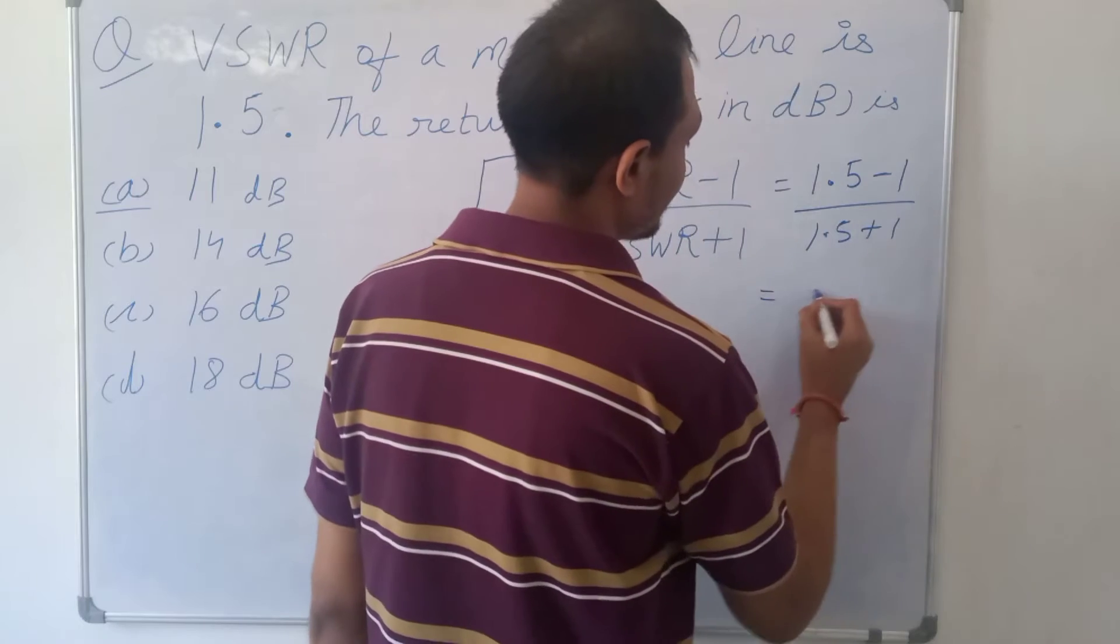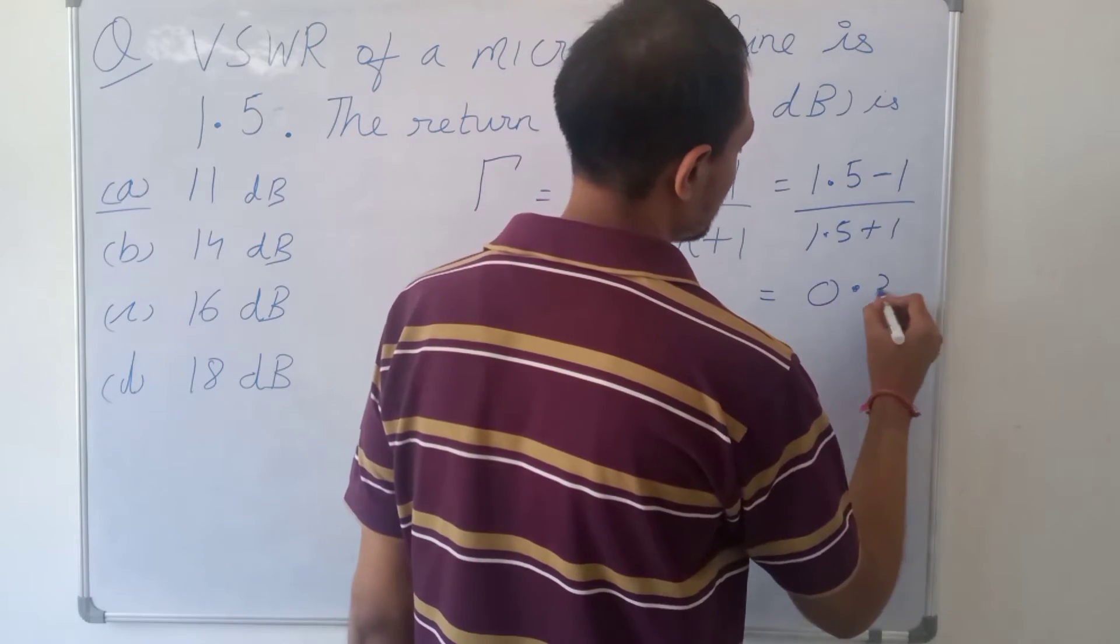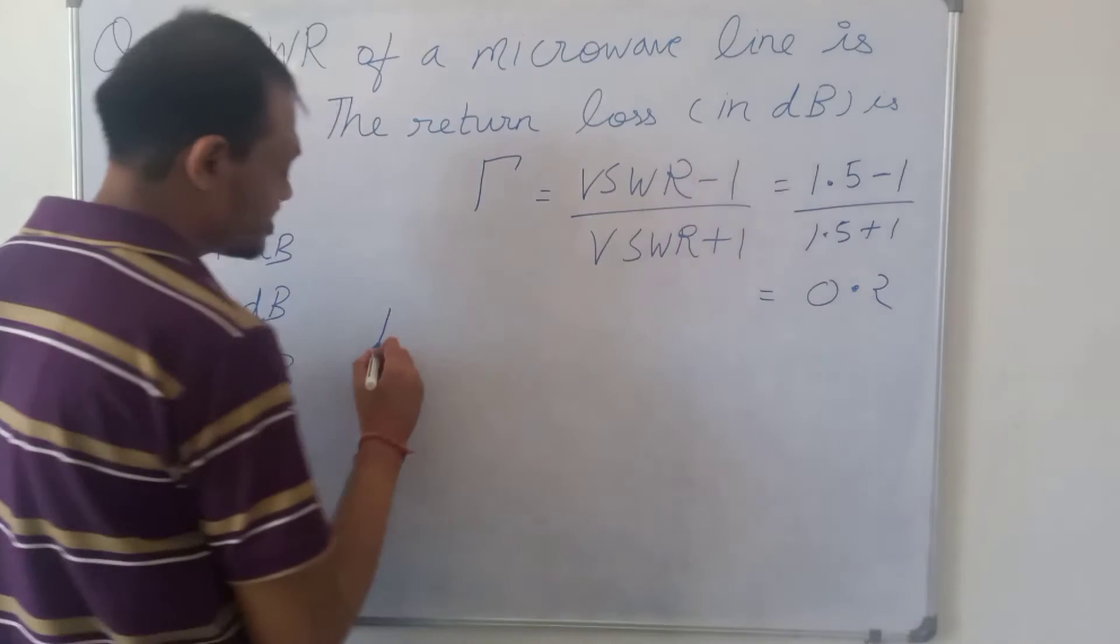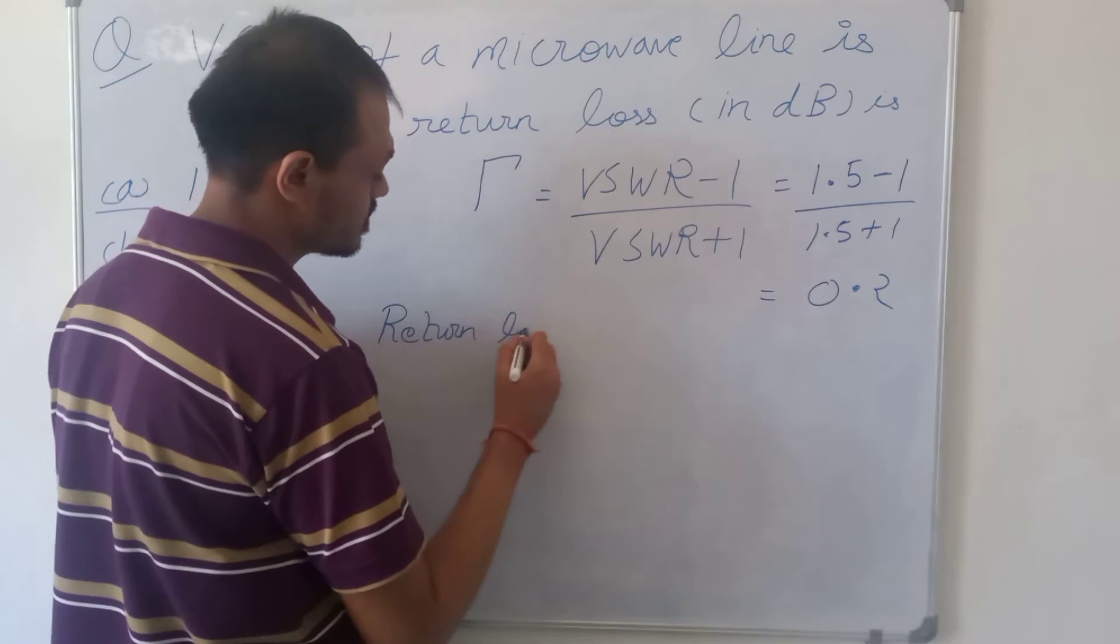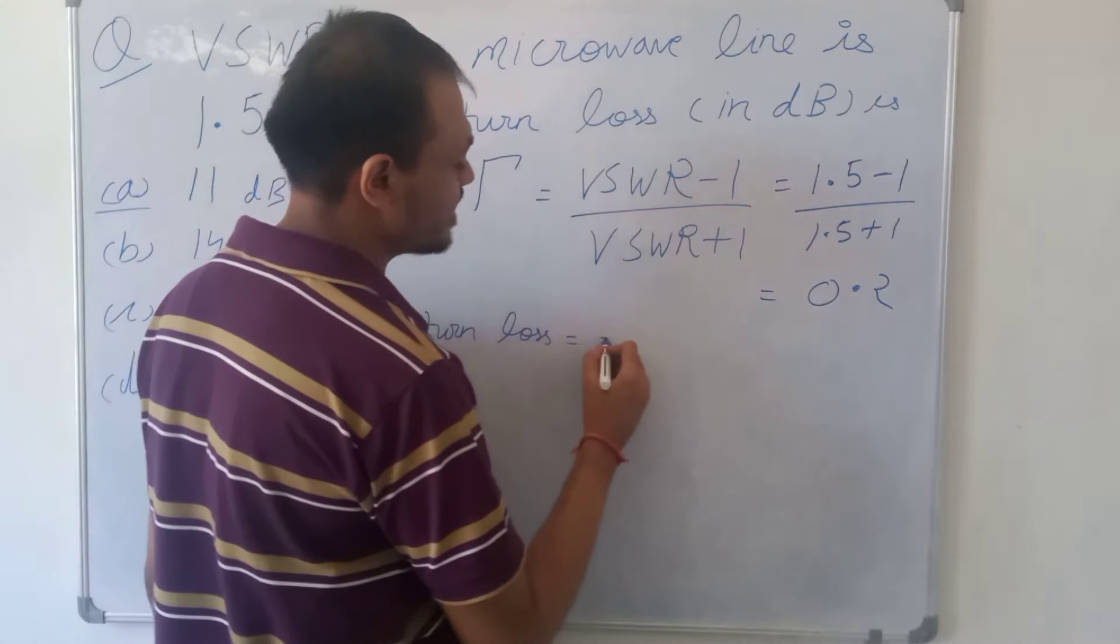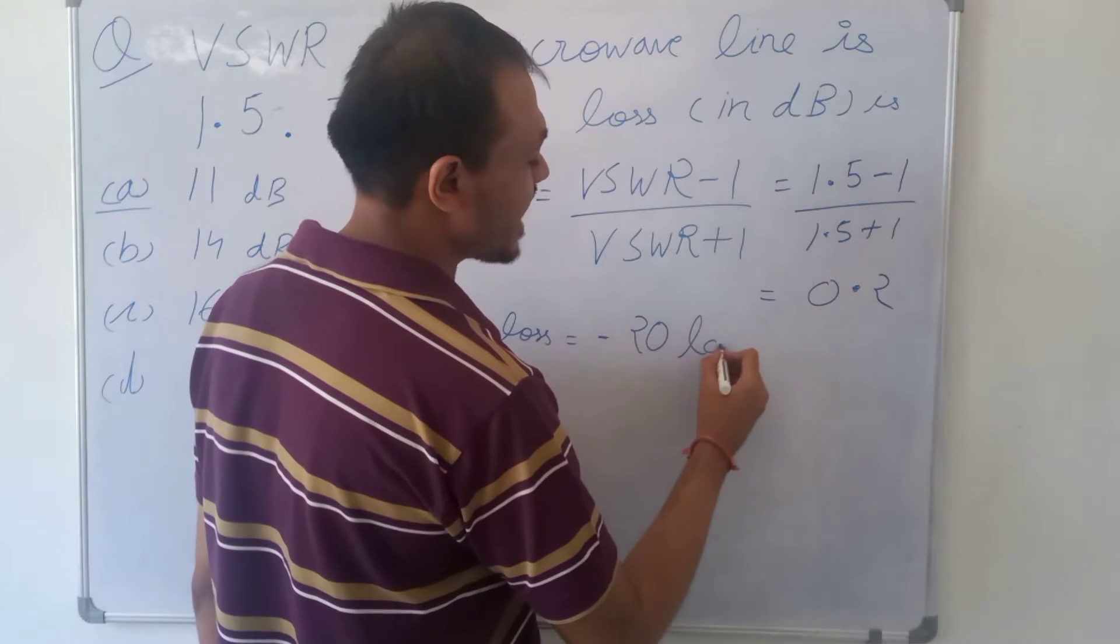This equals 0.2. Now, return loss is given as minus 20 log base 10 of tau, which is the reflection coefficient.